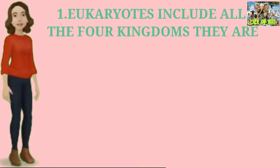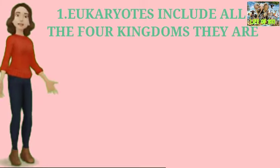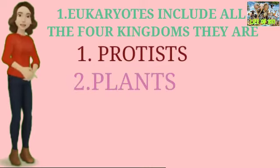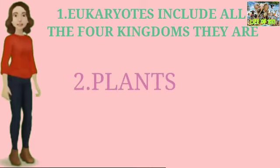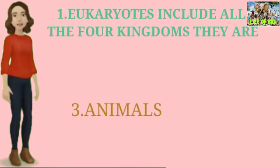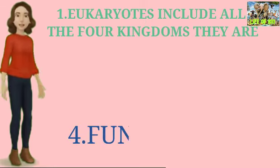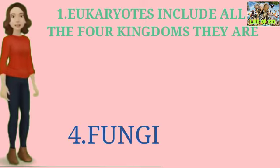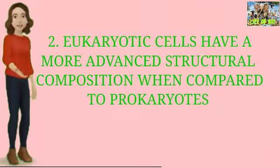First character: eukaryotes include all four kingdoms. These four kingdoms are: first, Protists; second, Plants; third, Animals; and fourth, Fungi. These four kingdoms are eukaryotes.